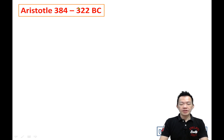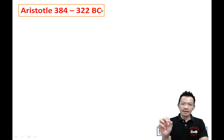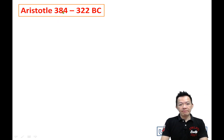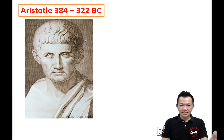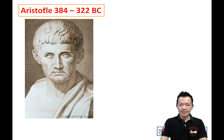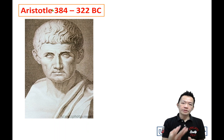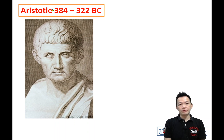Number one: Aristotle, 384 to 322 BC. So before we had the calendar, Aristotle was already there — 384 years before the common era. In Chinese, we call him Aristotle. Copy the name on the left-hand side. What are the contributions of Aristotle in the field of astronomy?